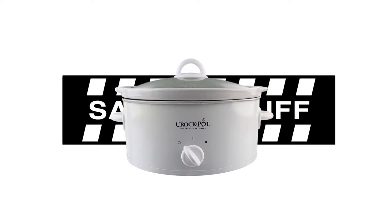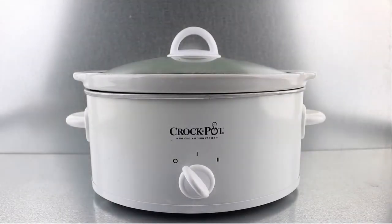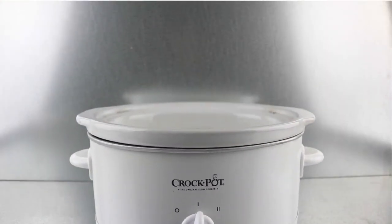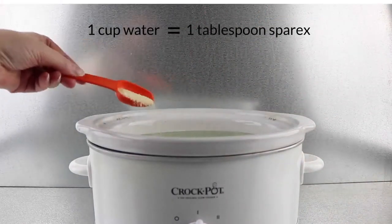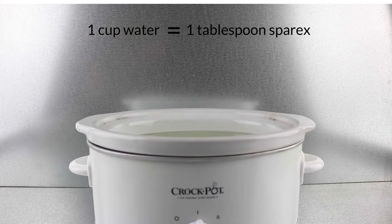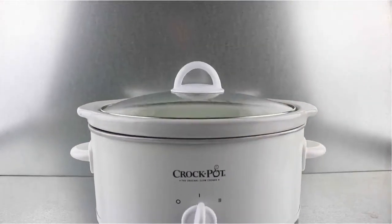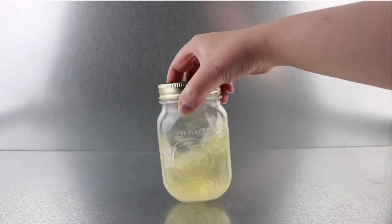And it goes without saying, don't use the same crock pot to pickle your metal in that you cook your dinner in. Set your crock pot to its lowest setting. For every one cup of boiling hot water, add one tablespoon of Sparex No. 2. Stir until the Sparex is fully dissolved. If you don't have a crock pot, use a glass or a ceramic container.